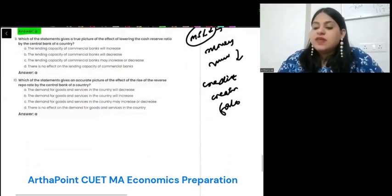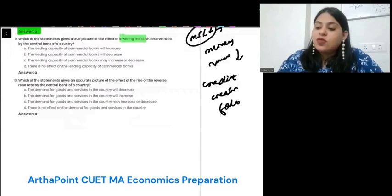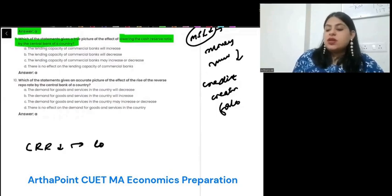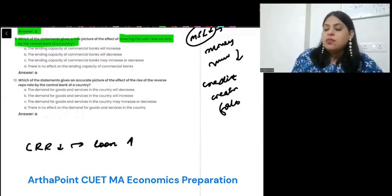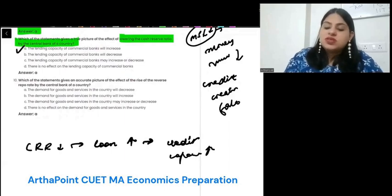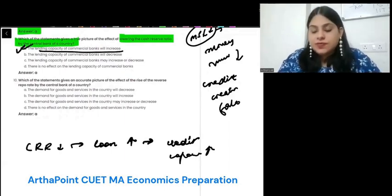Which of the following statement gives a true picture of the effect of lowering the cash reserve ratio by the central bank? When CRR reduces, the amount of loans in the market can increase. If banks can give more loans, credit capacity will be more. So the answer is A: the lending capacity of banks will increase.